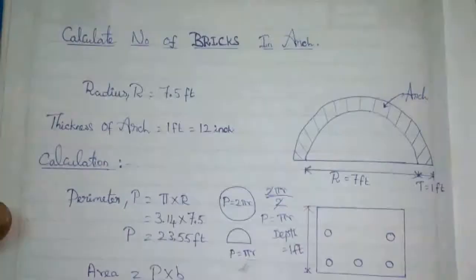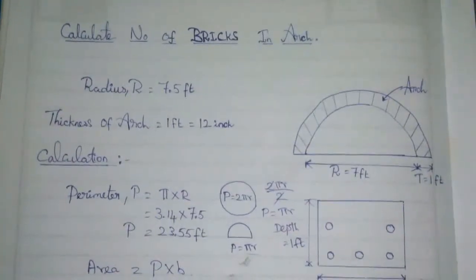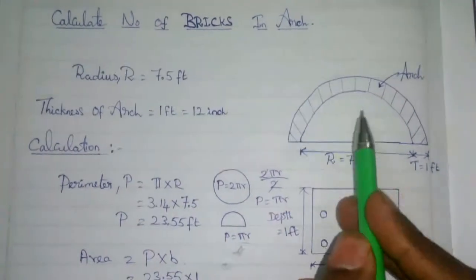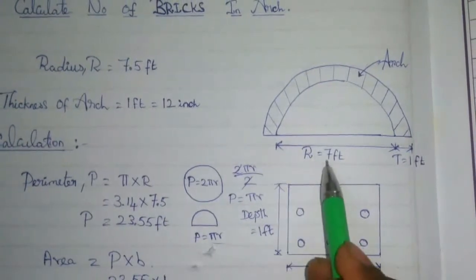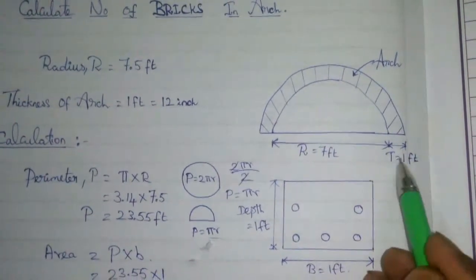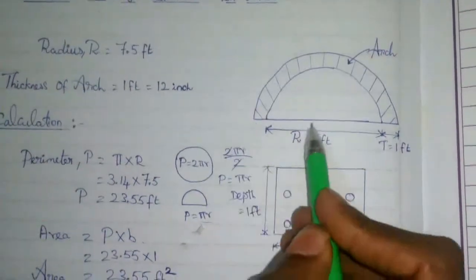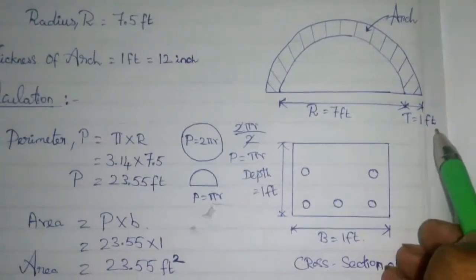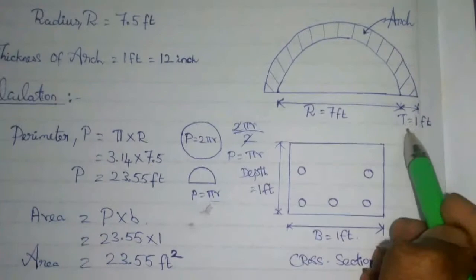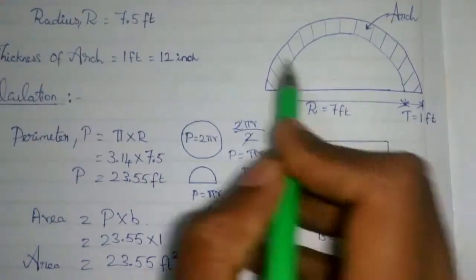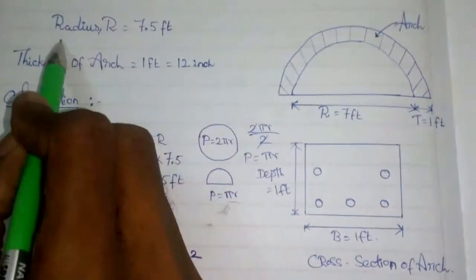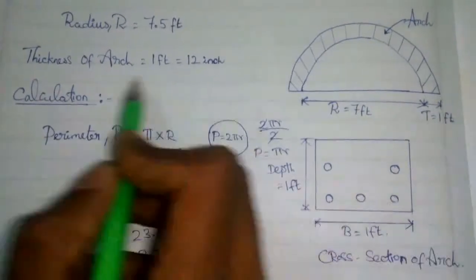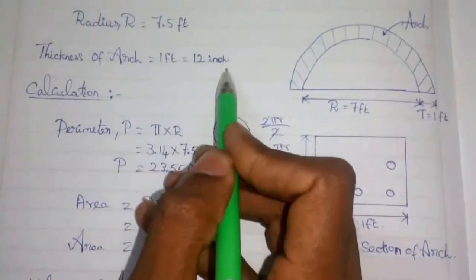In this video, we will calculate the number of bricks in an arch (Rs). The distance is 7 feet, the thickness is 1 foot. The inner radius is 7 feet and the outer dimension is 12 feet. The radius is 7.5 feet. The thickness is 1 foot.